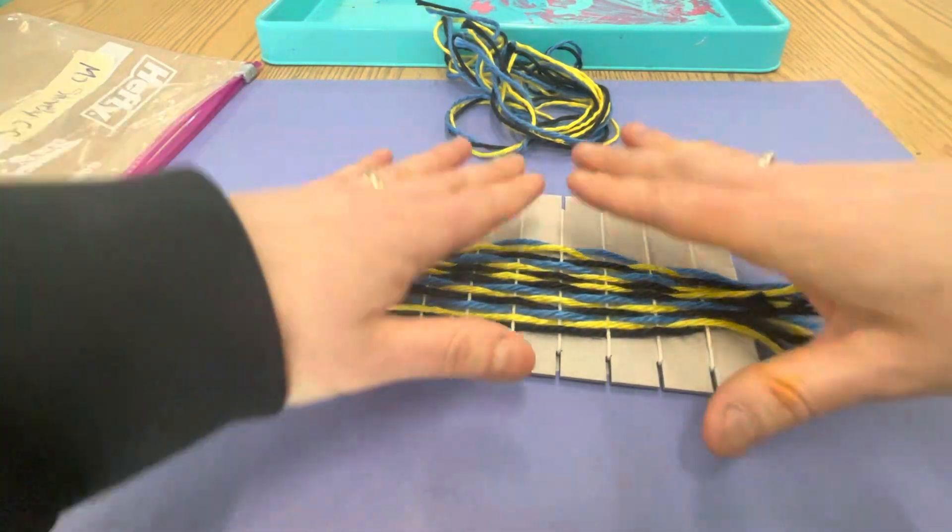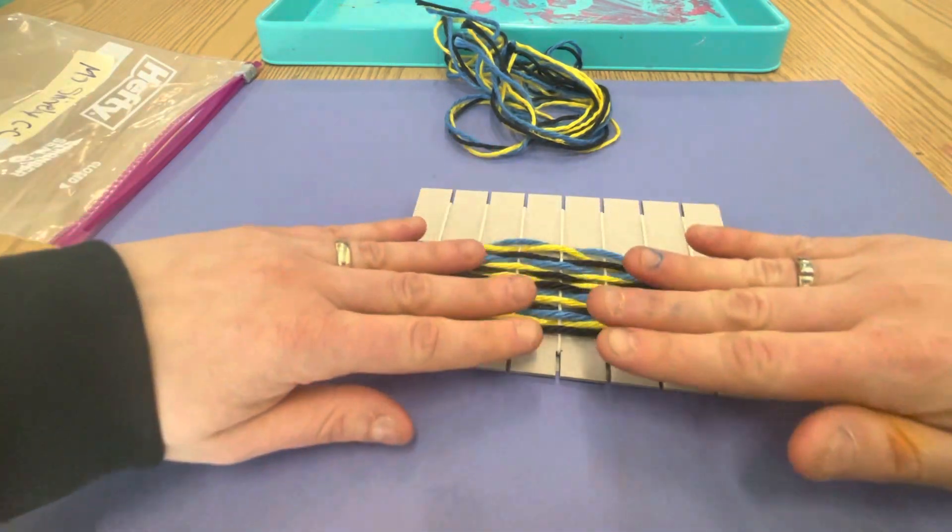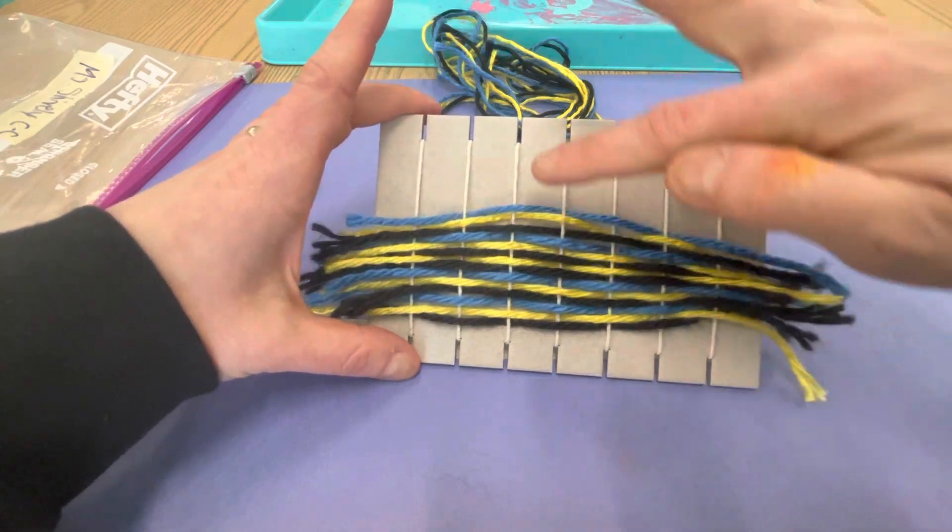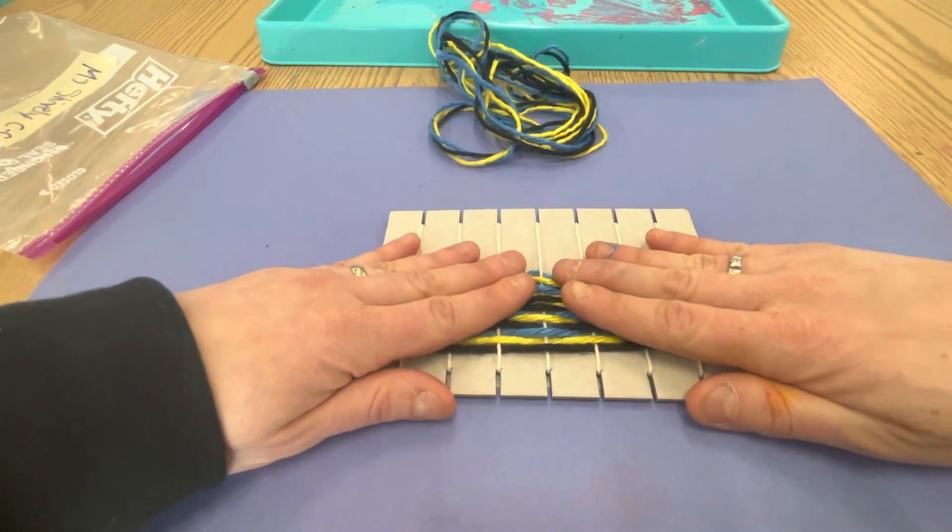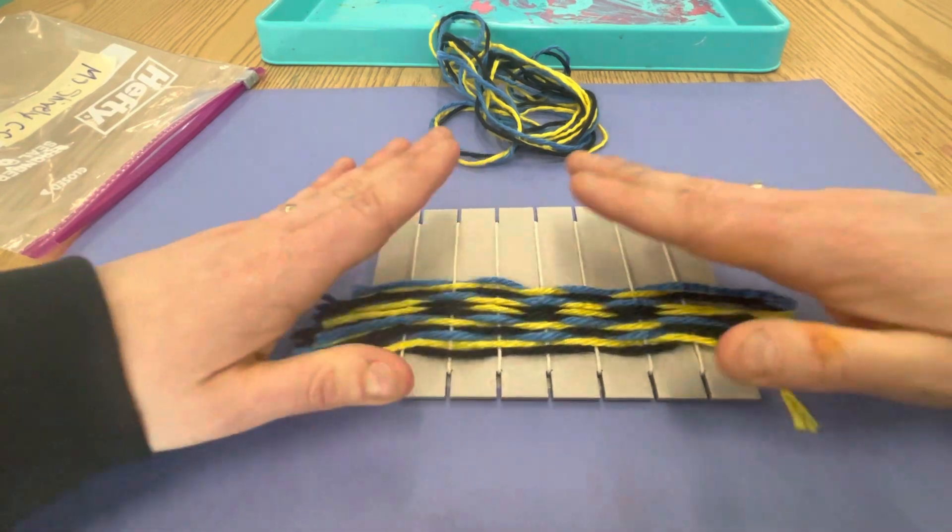Then you're going to smush it down so that we cannot see the warp thread. We should not see it, that should just be a mystery. So just put your fingers on top and gently smush it down.